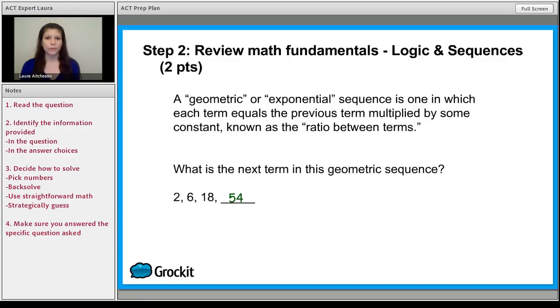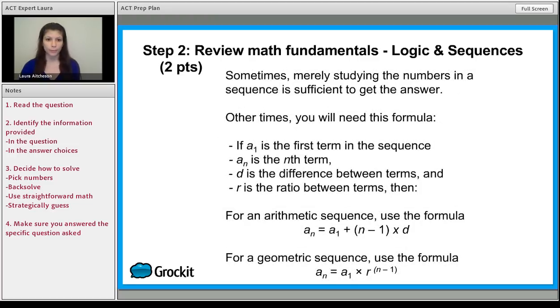But what if they wanted the 200th term? That's a little bit more complicated. In that case, you would use a formula. There are two different formulas, depending on whether or not you're adding and subtracting or multiplying and dividing. So if you're adding and or subtracting, you wouldn't be doing both, you would use this formula.